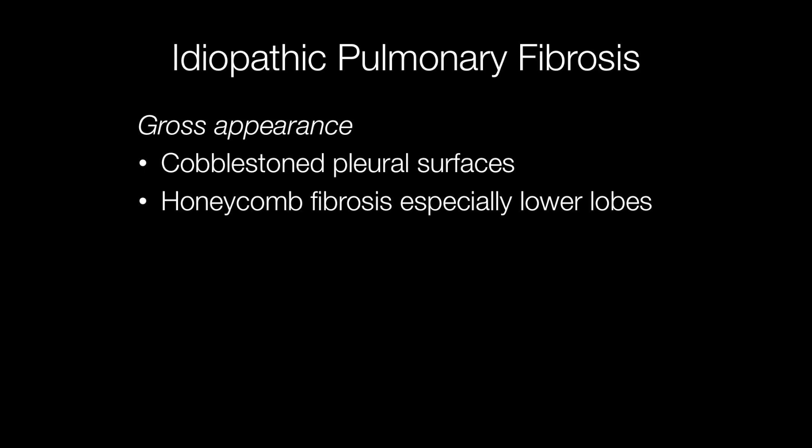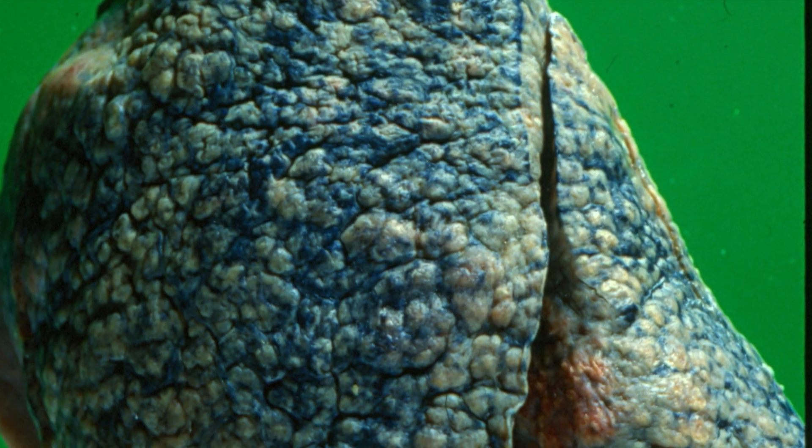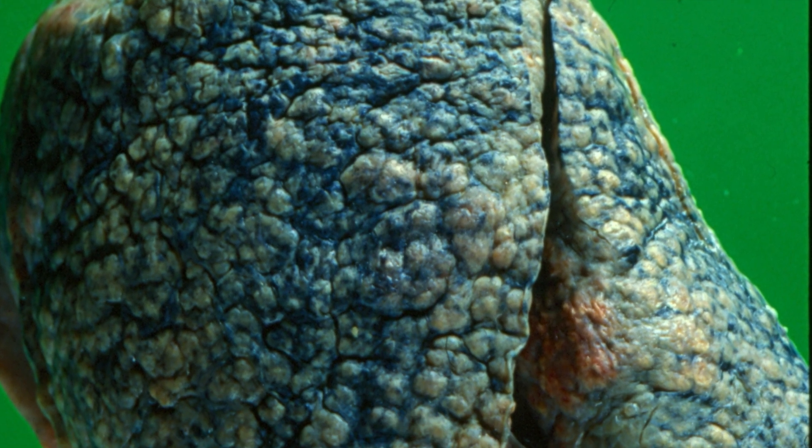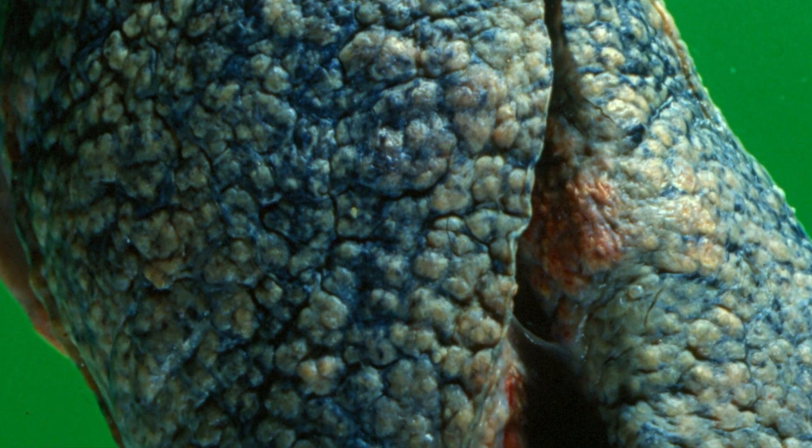The pleural aspect of the lung has a cobblestone appearance because of the underlying cystic air spaces. And this is the outer aspect of a lung affected by idiopathic pulmonary fibrosis with a typical cobblestone appearance.